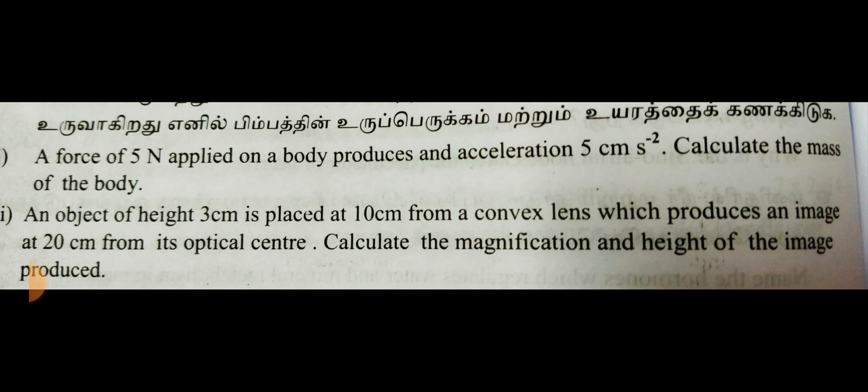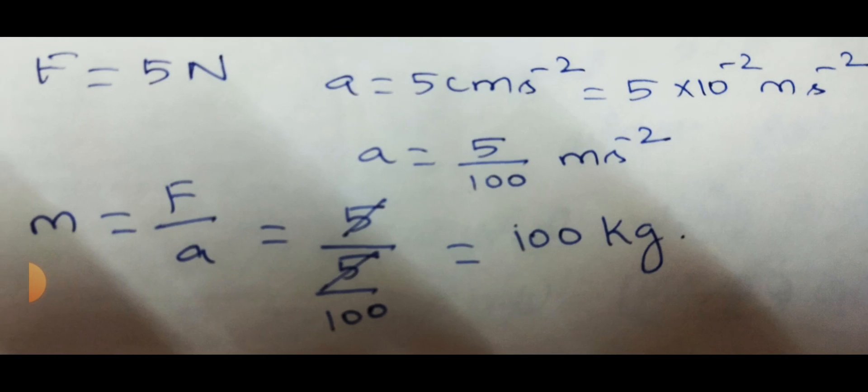The next question: the force of 5 Newton applied on a body produces an acceleration 5 cm second power minus 2. Calculate the mass of the body. So from the appearance, it is a very simple problem. The force is 5, acceleration is 5. So 5 divided by 5, we have a value of 1 kilogram. So that is a huge mistake you are going to do.